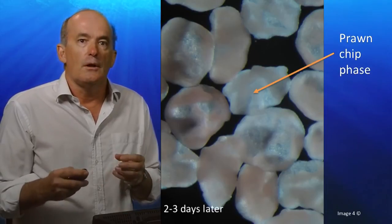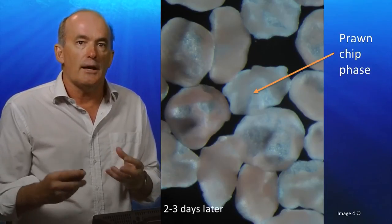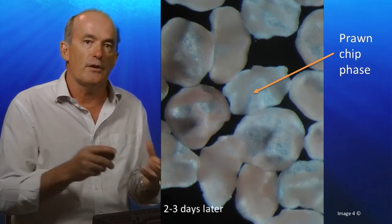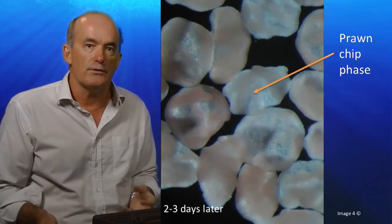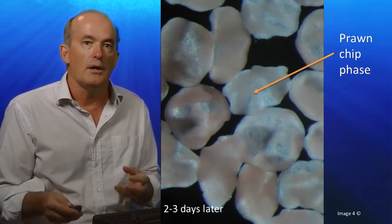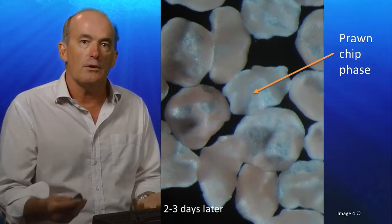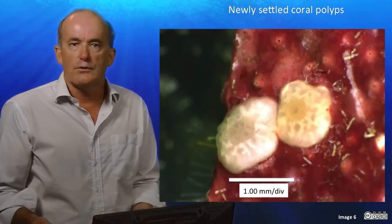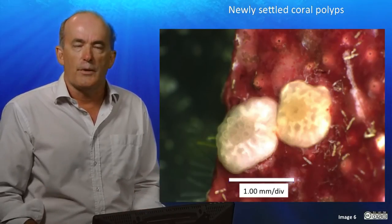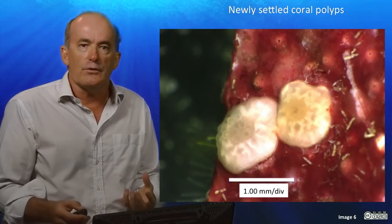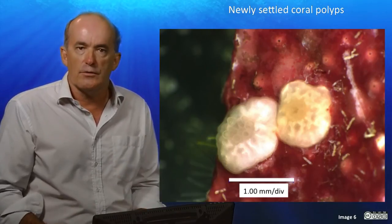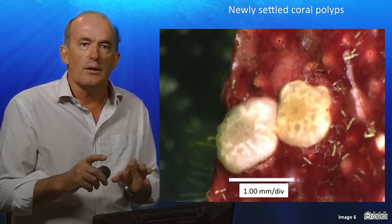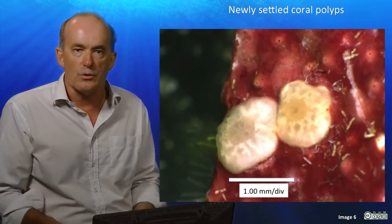These zooxanthellae help feed the larvae, which potentially allows them to disperse further. In some species of coral, planulae may transform into larval forms affectionately known as prawn chip larvae. Soon after this, larvae will begin to head away from the surface towards the bottom, potentially responding to chemical cues and settling on the sea floor. This photo shows a newly settled coral polyp, which is already developing feeding tentacles and a population of zooxanthellae. These newly settled polyps will grow into small colonies through asexual reproduction.